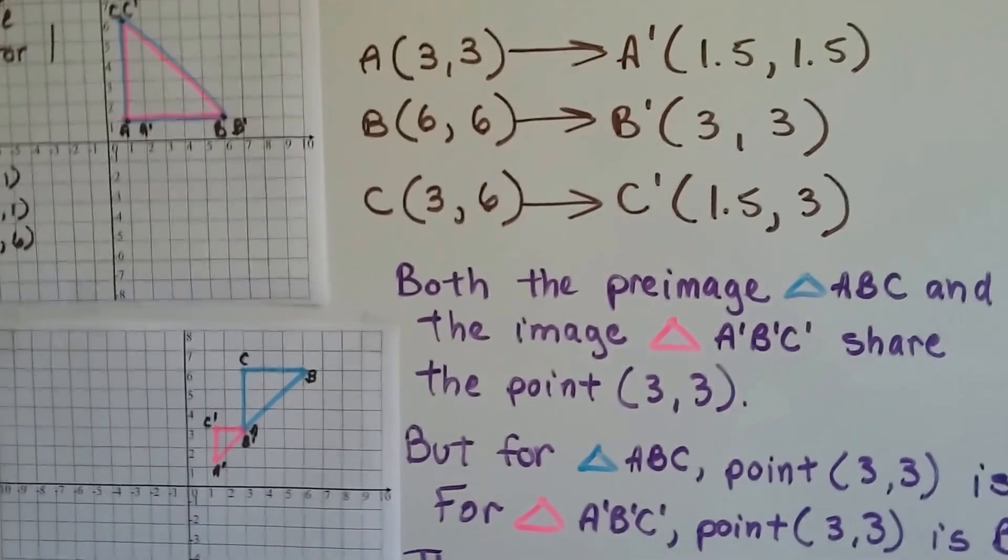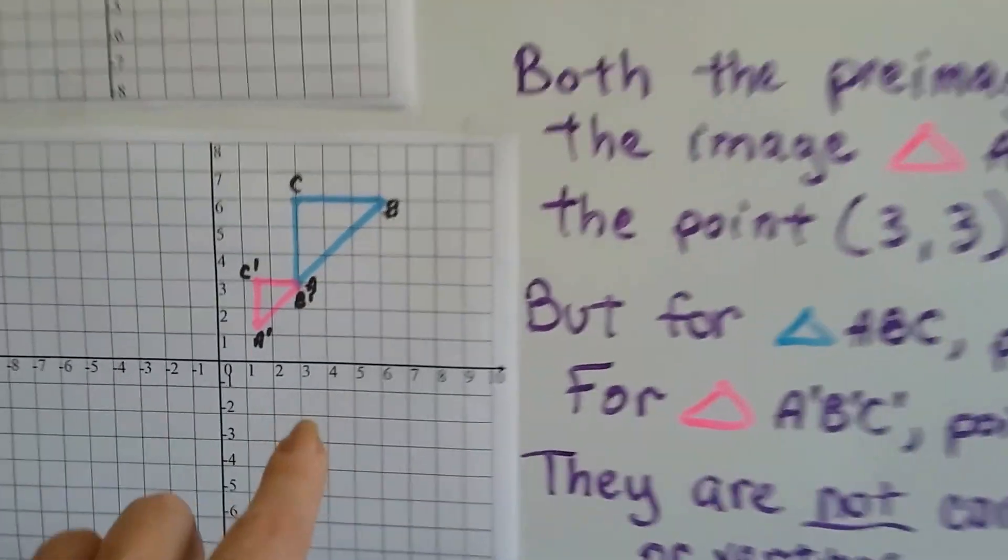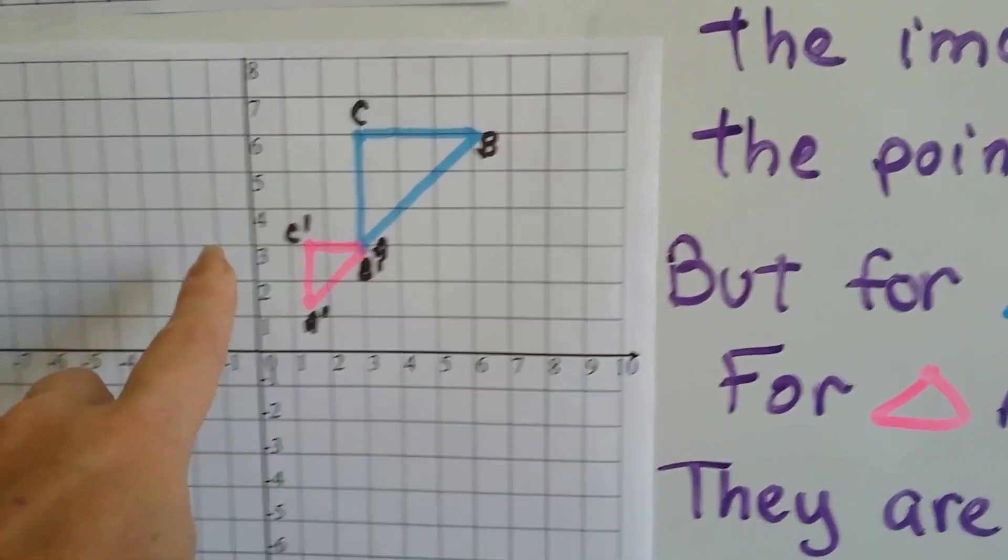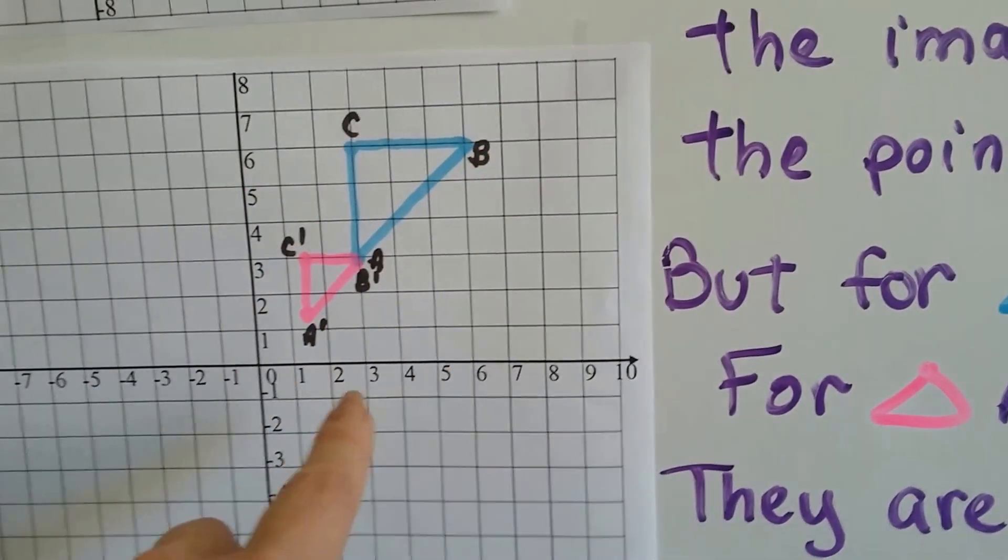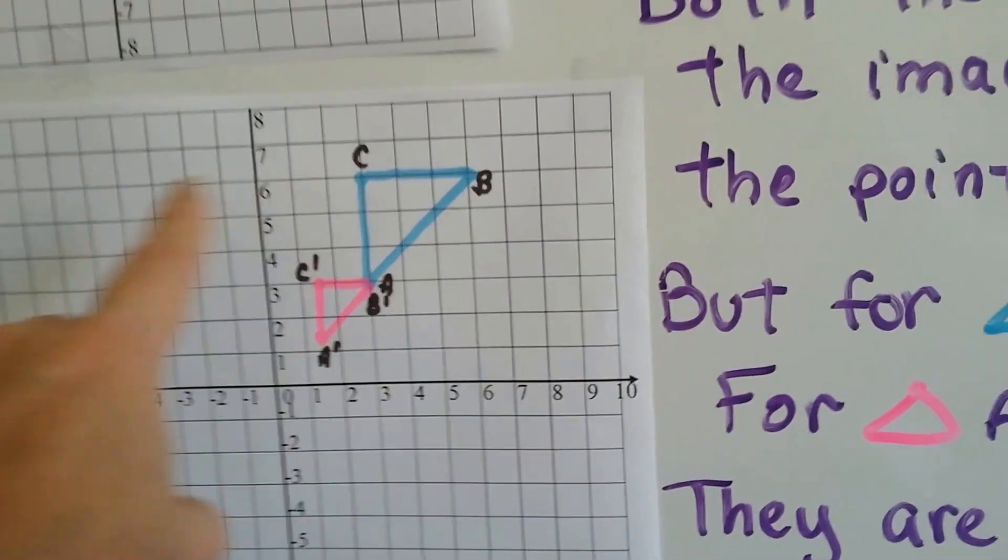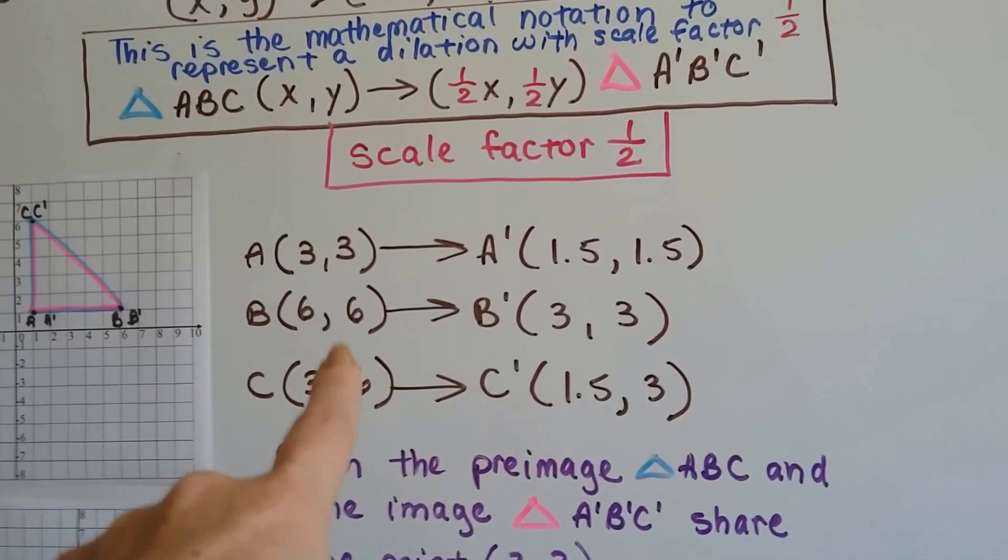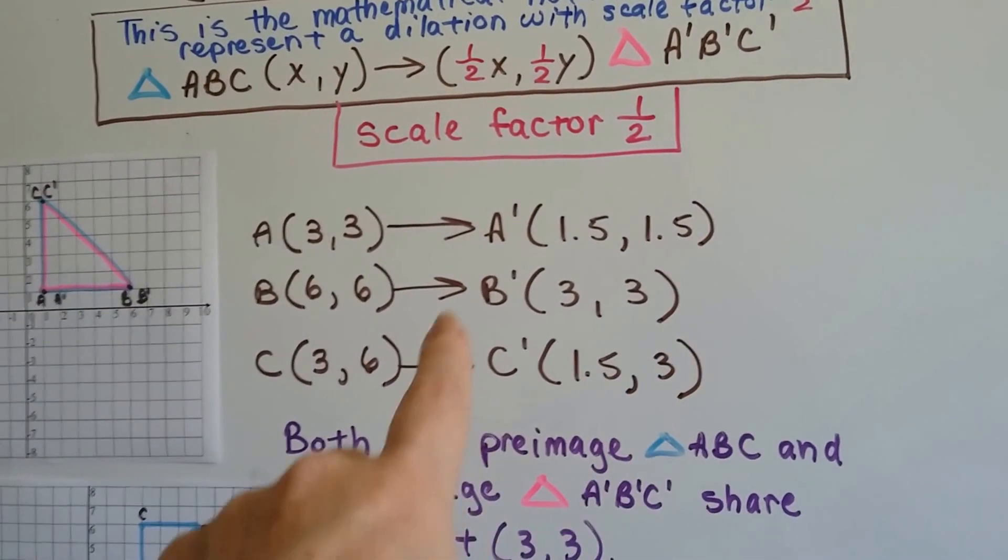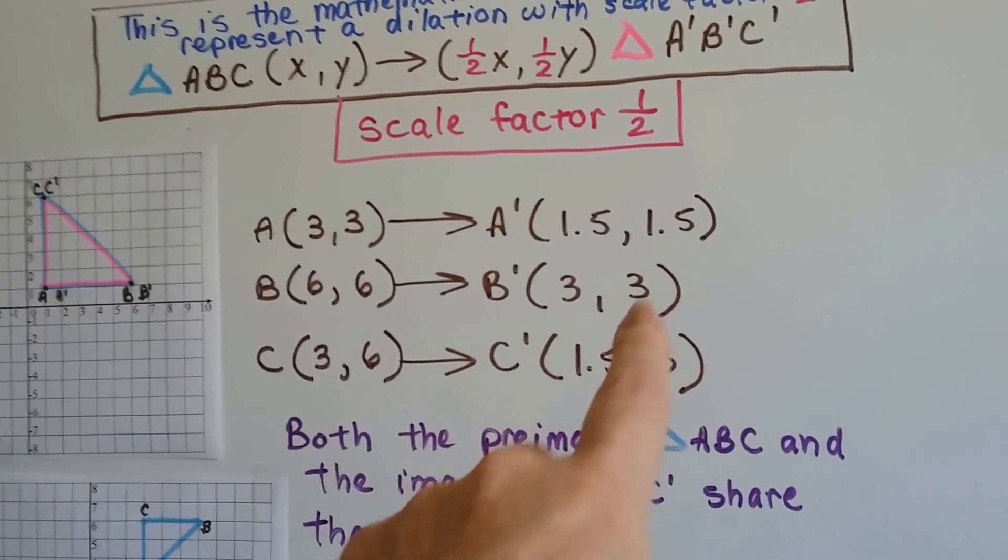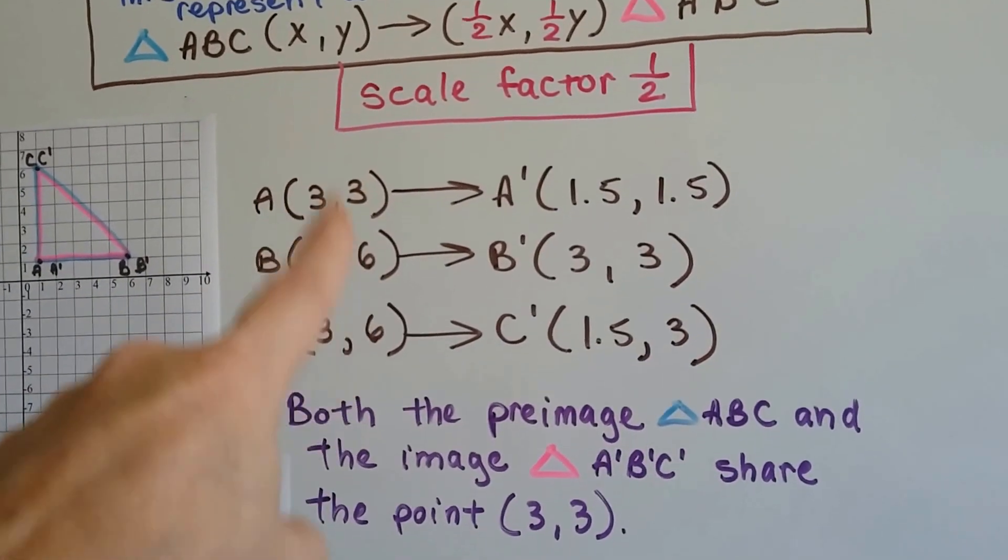We plot the points for this triangle. A is at (3,3), B is at (6,6), and C is at (3,6). When we multiply them by a half, A' becomes (1.5, 1.5), B' becomes (3,3), and C' becomes (1.5, 3). They're all half of these values.